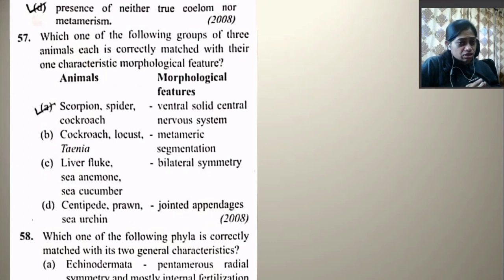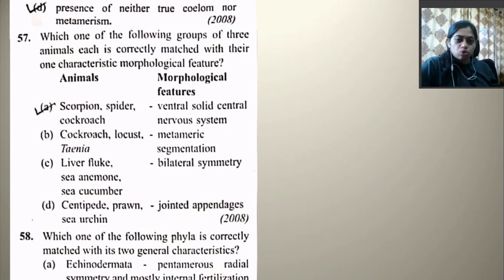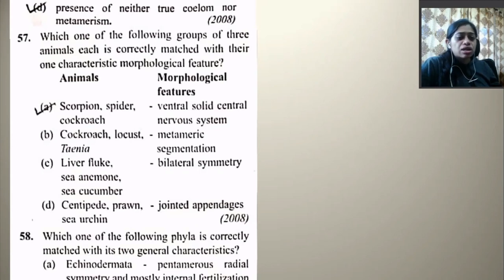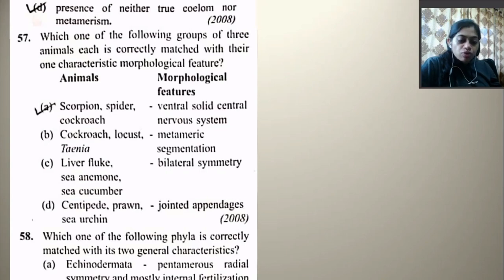Which one of the following group of three animals each is correctly matched with their morphological feature? Scorpion, spider, cockroach — ventral solid central nervous system — this is true for these three. Cockroach, locust, Taenia — metameric segmentation — Taenia does not have metameric segmentation. Liver fluke, sea animal, sea cucumber — bilateral symmetry — no, because some are echinoderms. Centipede, prawn, sea urchin — jointed appendages — sea urchin does not have jointed appendages.